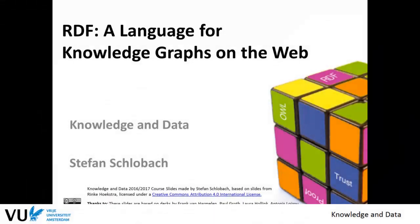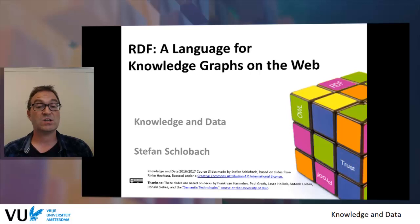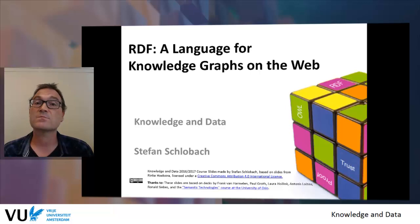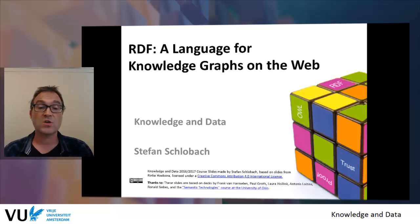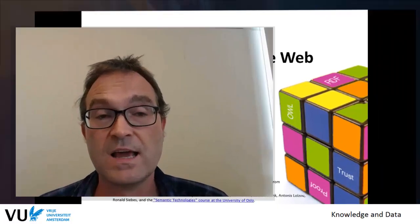Welcome to the third lecture of the second module of the course Knowledge and Data. In the previous two lectures, I argued that using data published on the web is very difficult because this data is mostly still living in silos. Even though it is published on the web, it's not possible for machines to access it and link it to their own applications and data. Knowledge graphs are a potential solution, requiring some technological and social advances.